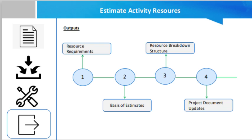Resource breakdown structure is a hierarchical representation of the resources by category and type. Examples of resource categories include, but are not limited to, labor, material, equipment, and supplies.